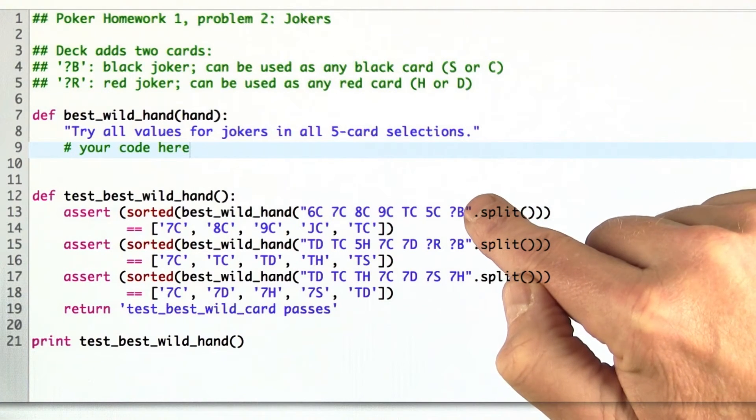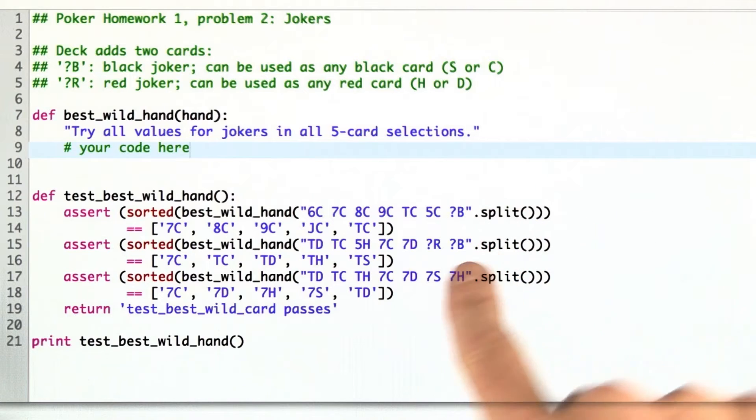and we can use that wild card, that joker, and replace it with a jack rather than a 10, and now we get a slightly higher straight. We have a straight with a jack high rather than a 10 high.